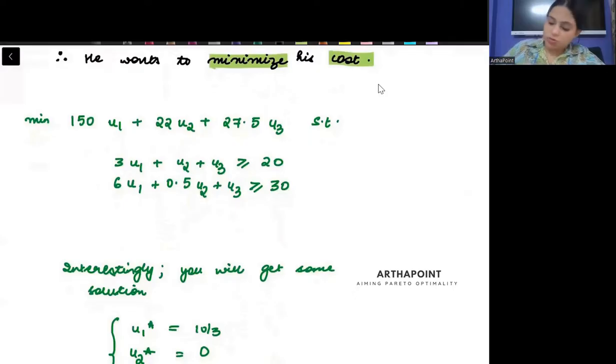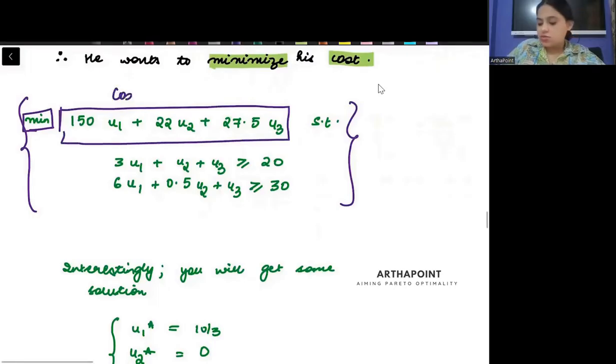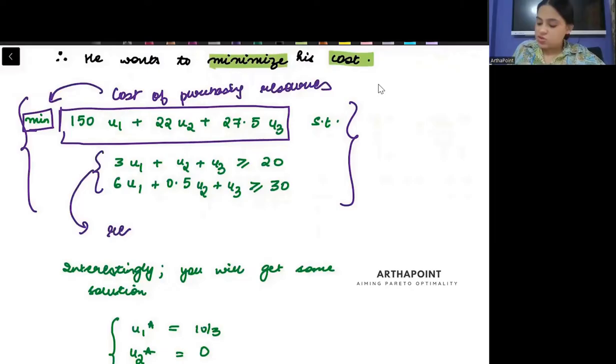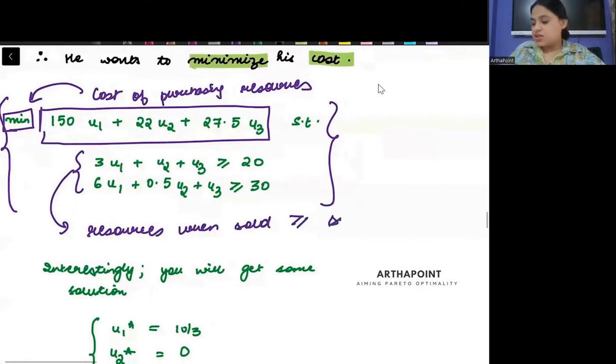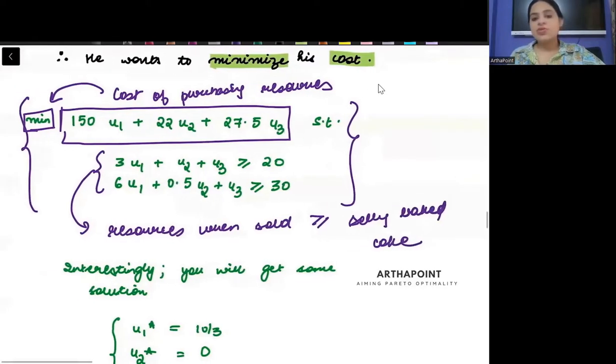Let us read this problem. What is it saying? I want to minimize the cost of purchasing the resources, subject to the condition that these resources when sold make as much money as selling the baked cake.